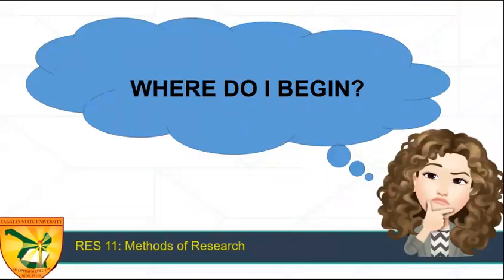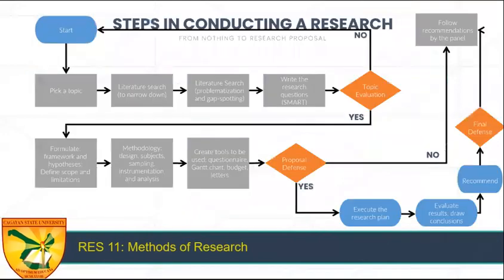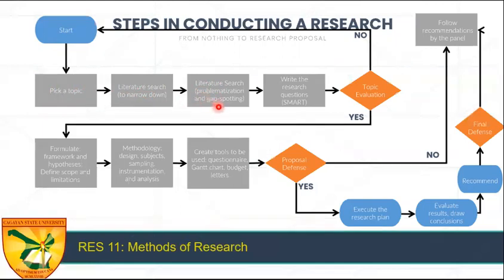The first question when asked to do a research — and I always ask the same question to myself every time I am tasked to propose a research — is: where do I begin? So let's go back to this slide from your unit one. We start with picking a topic. Normally they say we start with identification of the problem. Picking a topic is actually identification of the problem area. So we pick a topic, normally three. And for your class, I will ask each member to pick a topic. Then survey the literature relating to it to narrow down the topic. Then survey the literature again to look at the problems and gaps. Then write the research questions the smart way. So that will undergo topic evaluation, which can be through a panel or self-evaluation.